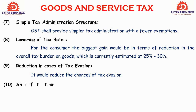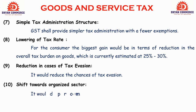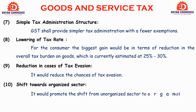Next benefit: shift towards organized sector. The earlier indirect taxation system was unorganized — asangathit. But with GST, the central government and state governments' taxes have been merged, and now only one tax is applicable — GST. This promotes the shift from the unorganized sector to the organized sector. With indirect taxes now unified, the tax structure has become organized.